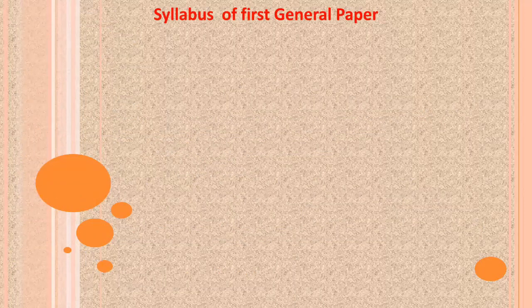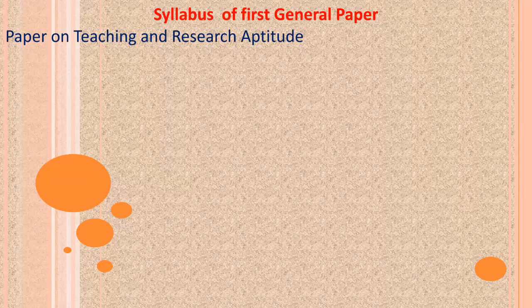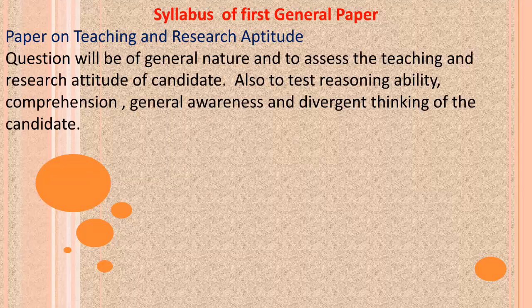Now let us see the syllabus for Paper 1, which is a general paper on teaching and research aptitude. Questions in this paper are of a general nature and are designed to assess the teaching and research aptitude of the candidate. It also tests reasoning ability, comprehension, general awareness, and divergent thinking.